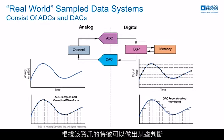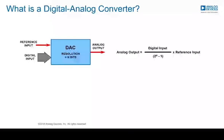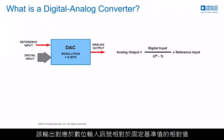Depending on the characteristics of that information, certain decisions are made — such as routing a piece of information to another network node, or taking a certain action with the transceiver at a particular time. The transmit path is the exact opposite, where the information needs to be delivered to a real-world device.